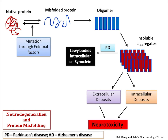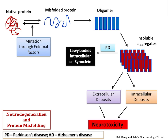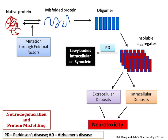Parkinson's disease and Alzheimer's disease are under the category of neurodegenerative disorders. The major pathophysiology involved in both conditions is protein misfolding. When a native protein, through external factors or mutation, undergoes misfolding inside the brain, it generates different types of monomers and oligomers. These oligomers are then converted into insoluble aggregates, which when deposited extracellularly and intracellularly produce neurotoxicity and ultimately neuronal death.